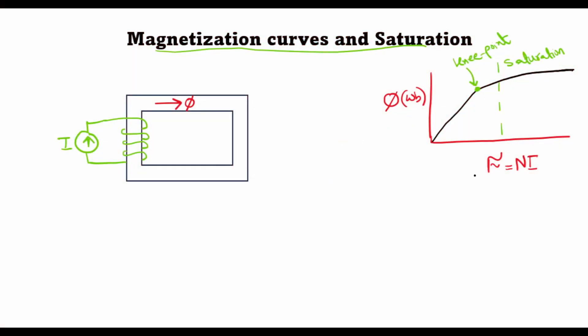Now this plot was between the flux and the magnetomotive force, but we know that flux is equal to B times A, and B is equal to mu times H where H is equal to NI divided by LC. So in other words, the flux is directly proportional to the magnetic flux density, and the magnetic field intensity H is directly proportional to the magnetomotive force.